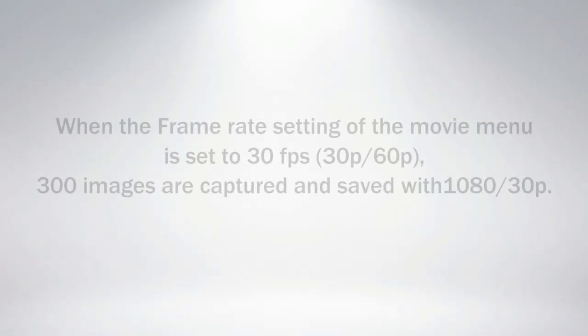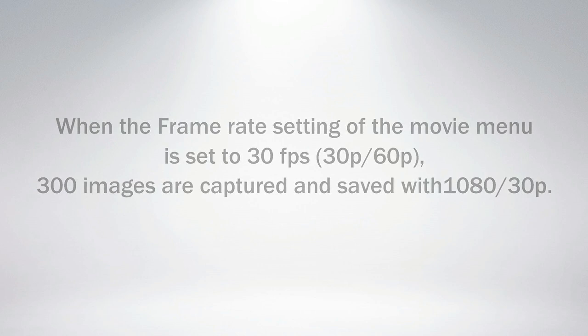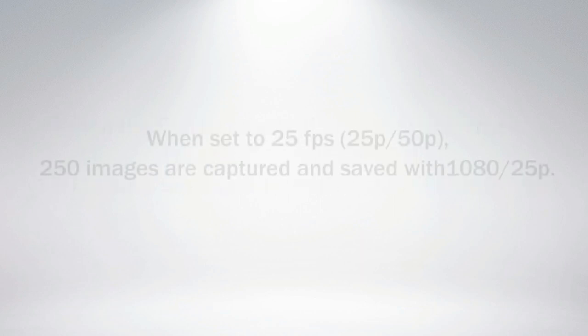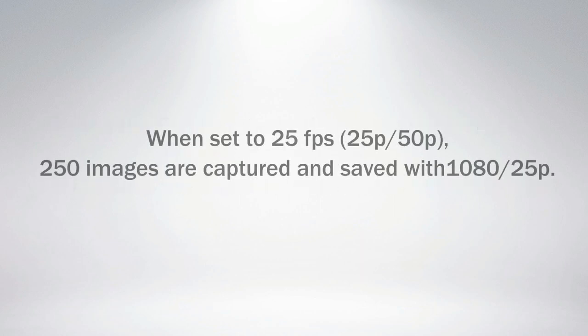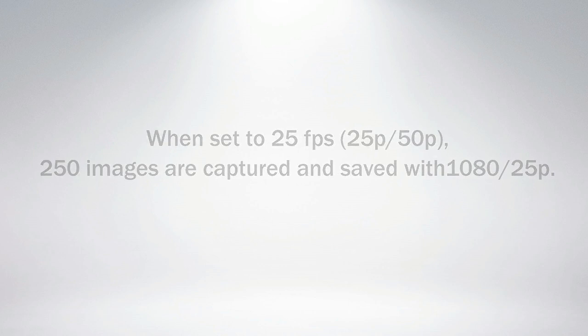When the frame rate setting of the movie menu is set to 30 fps, 300 images are captured and saved with 1080/30p. When set to 25 fps, 250 images are captured and saved with 1080/25p.